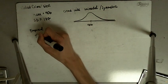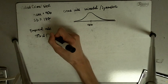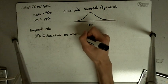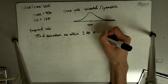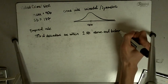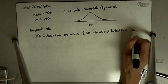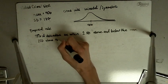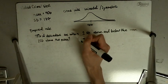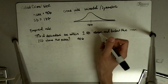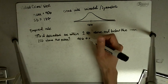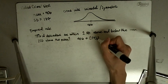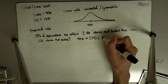According to the empirical rule, about 95% of the observations are within two standard deviations above and below the mean. So where is two standard deviations above the mean? The mean is 406, each standard deviation is 177, and we're going to go two standard deviations above the mean.